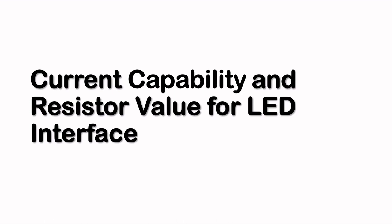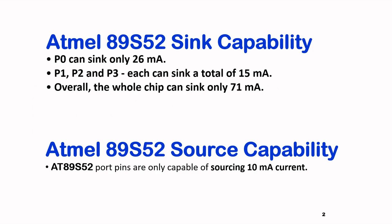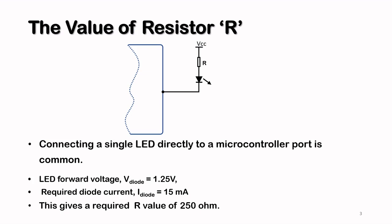Now let's take a look at the current capability of the AT89S52 and how to calculate the resistor value for the LED interface. For the AT89S52, port 0 can sink 26 milliamps, while port 1, port 2, and port 3 can each sink a total of 15 milliamps. Overall the whole chip can sink 71 milliamps. For sourcing, the port pins are only capable of sourcing 10 milliamps.